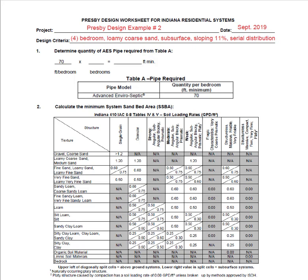Step number one is to determine how much Advanced Enviro-Septic pipe is required. As you can see looking at table A, 70 feet of pipe per bedroom is standard. We will enter our number of bedrooms — in this case four — and multiply by 70 feet. This brings us to a total of 280 feet of pipe minimum.